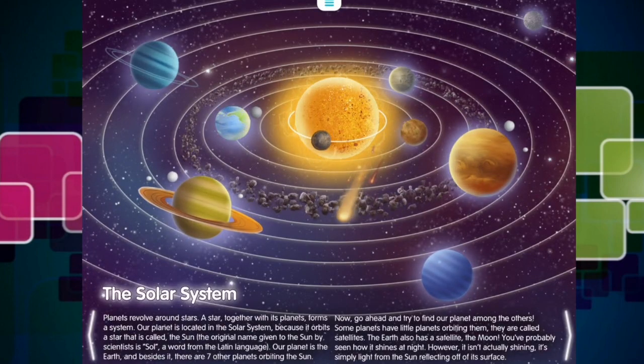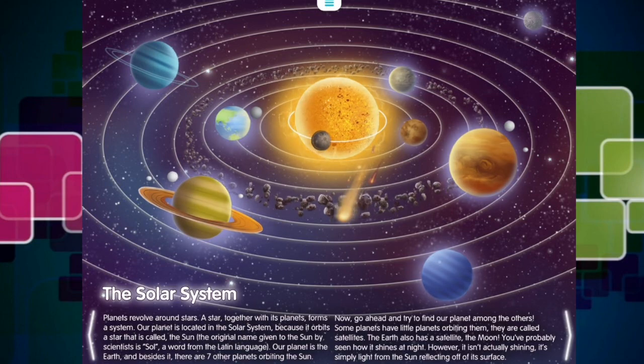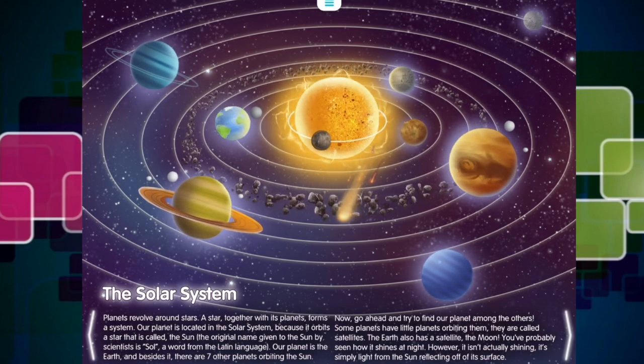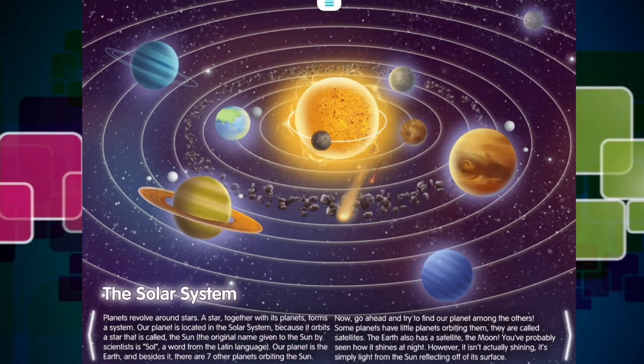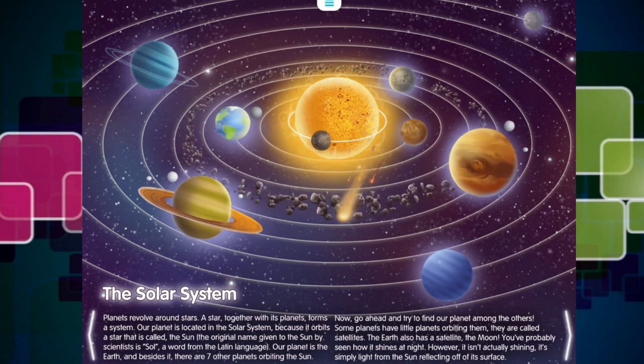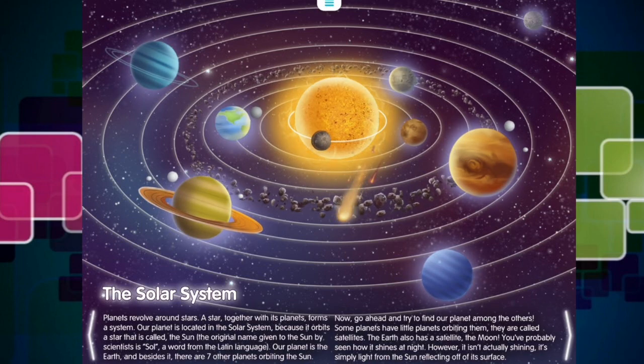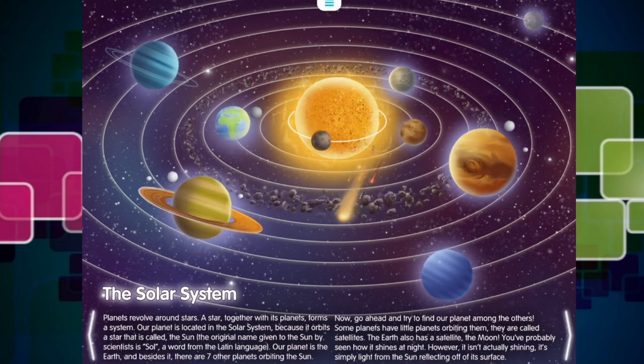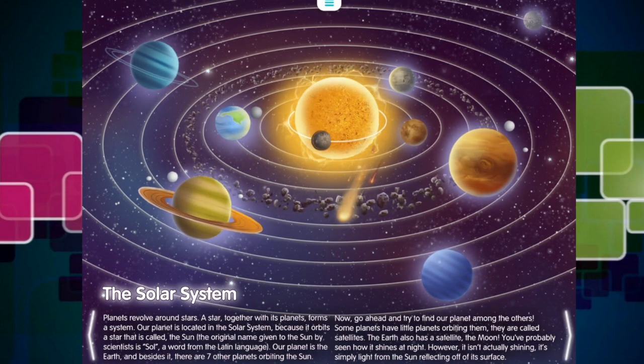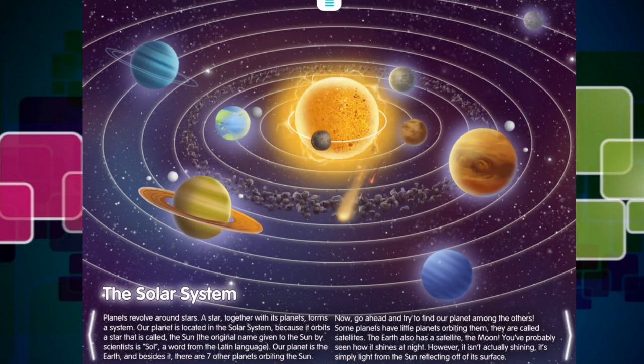Planets revolve around stars. A star, together with its planets, forms a system. Our planet is located in the solar system, because it orbits a star that is called the sun. The original name given to the sun by scientists is Sol, a word from the Latin language. Our planet is the Earth, and besides it, there are seven other planets orbiting the sun. Now, go ahead and try to find our planet among the others.